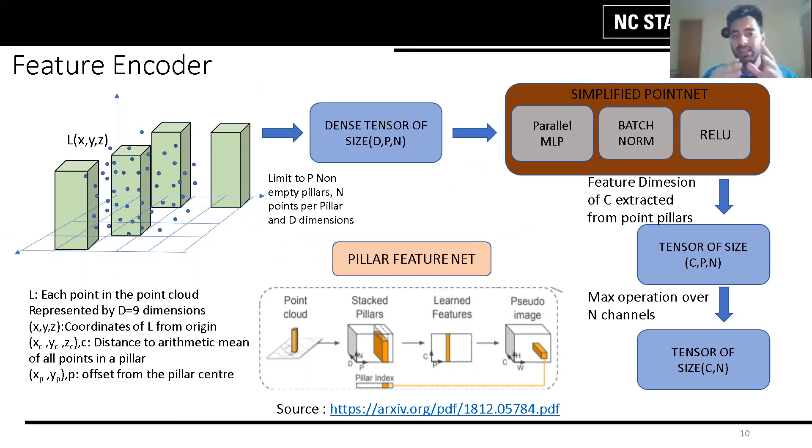The points in each pillar are then augmented with respect to the mean of all the points in the pillar and offset from pillar center. The LIDAR point L is now 9 dimensional. Next, we pass this tagged pillar to a pre-trained PointNet-based encoder network to generate a tensor of size C×P×N. This is followed by a maximum operation over the N channel to create an output tensor of size C×P. Once encoded, the features are scattered back to the original pillar location to create a two-dimensional pseudo image.